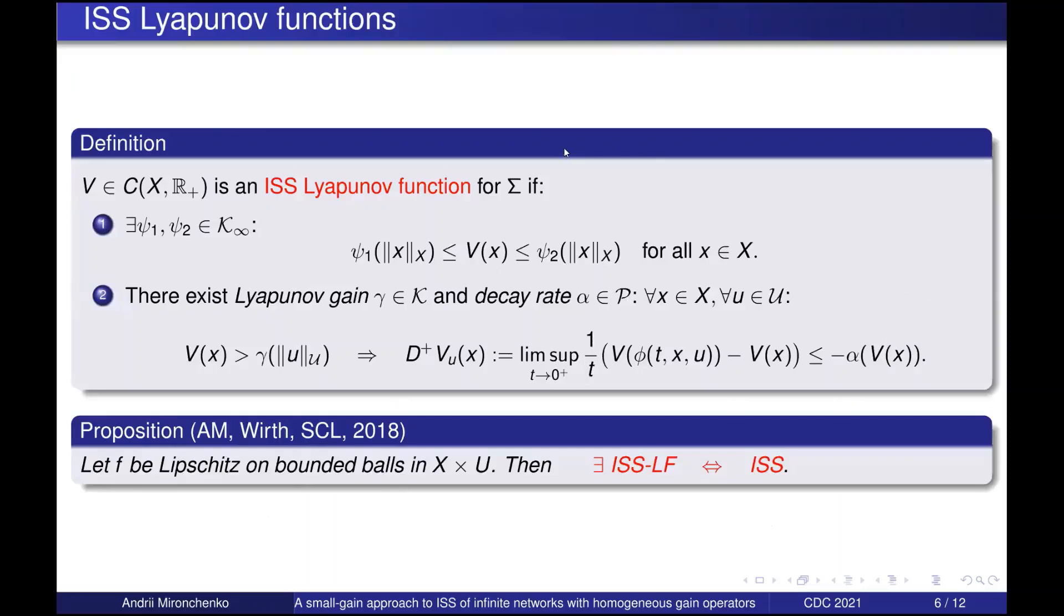The main tool how we can analyze ISS are ISS Lyapunov functions. We say that a continuous function V is an ISS Lyapunov function if it satisfies such sandwich estimates with some Psi1 and Psi2 which are K-infinity functions. Also the Lyapunov function must satisfy such an implication: that if the state is large enough with respect to input, then the Lyapunov function decays along the trajectory, which we express by writing that its derivative is less or equal than this term, where alpha is a positive definite decay rate.